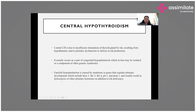Familial hypopituitarism involves multiple pituitary hormone deficiencies, resulting from mutations in genes responsible for pituitary development, causing multiple pituitary hormone deficiency (MPHD). The common genes involved are SX1, LHX3, LHX4, PIT1, PROP1, among others.